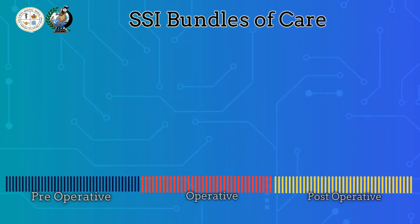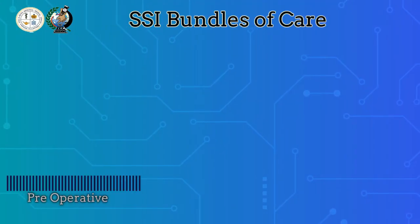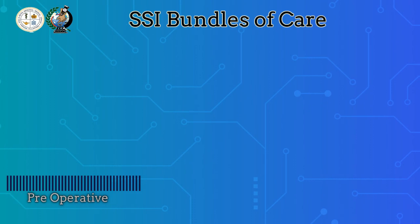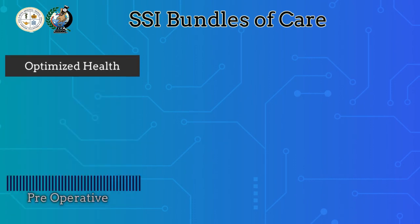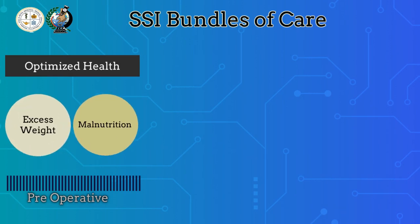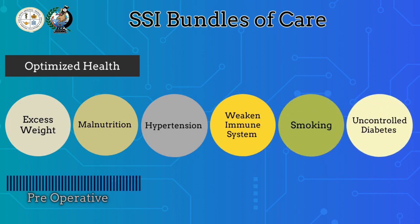The bundles that need to be considered for pre-operative prevention of SSI are the following. First, we need to optimize health control risk factors, such as excess weight, malnutrition, hypertension, weakened immune system, smoking, and especially uncontrolled diabetes.